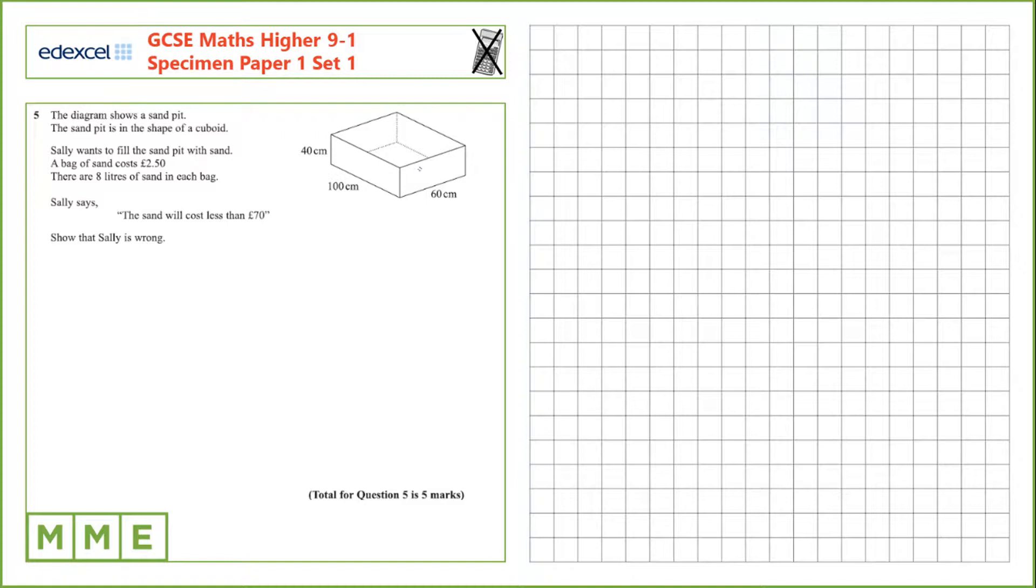First let's figure out the volume of sand that we require, by multiplying each of these dimensions to find the volume of the cuboid. So 40 times 100 times 60 is 240,000 cm³. We need to convert that into litres, and we can use the conversion that 1 litre is 1000 cm³. So this divided by 1000 is 240 litres.